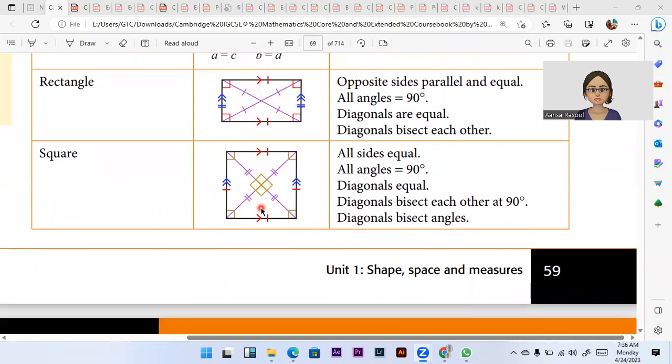In square, all sides equal. All angles equal. All diagonals equal. Everything is equal. That's for square.